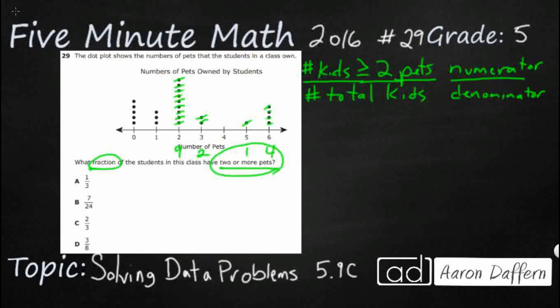So if I add up my nine, my two, my one, and my four. Let's see. Nine, two, one, and four. Let's see. One and nine, that's going to give me 10, 12, 16. Okay. So I've got 16. So it looks like I've got 16 kids that have two or more pets. So that's good.